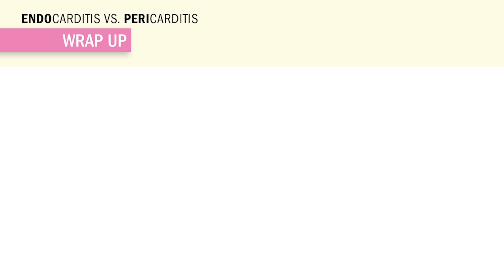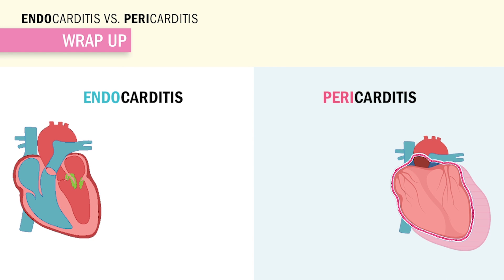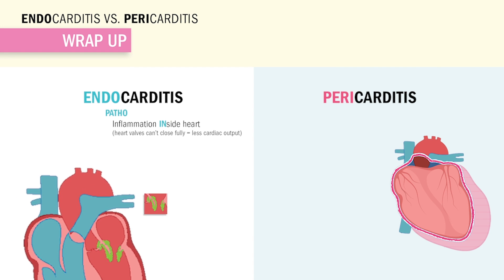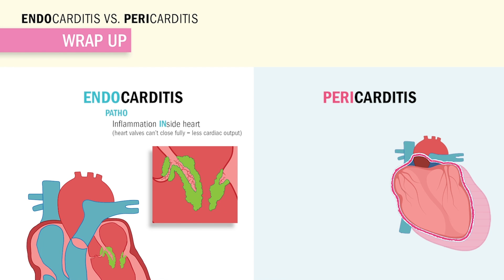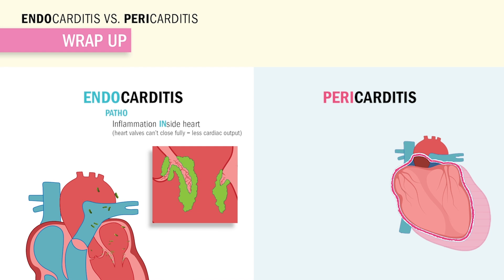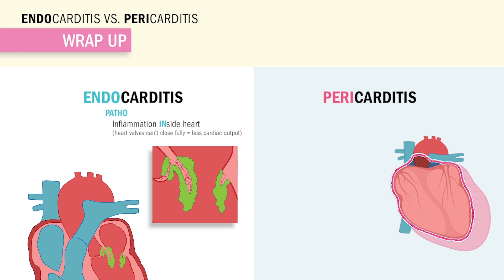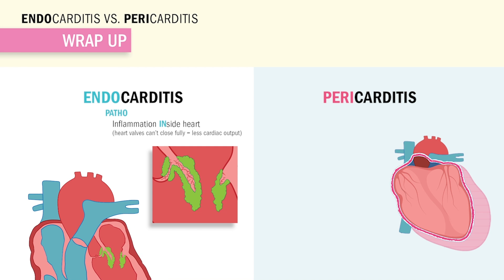Now the wrap-up for endocarditis versus pericarditis. Endo means inflammation inside the heart, usually from bacteria like strep or staph infection — this is called infective endocarditis. Patients have damaged valve doors and sepsis, aka blood-borne infections, and this makes it harder for the heart to pump out oxygen to the body, which means less cardiac output.